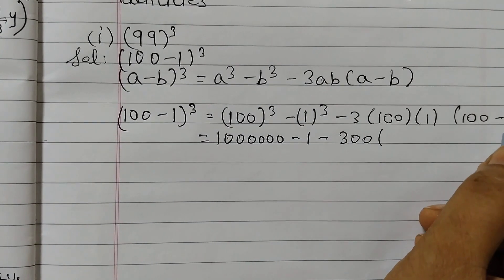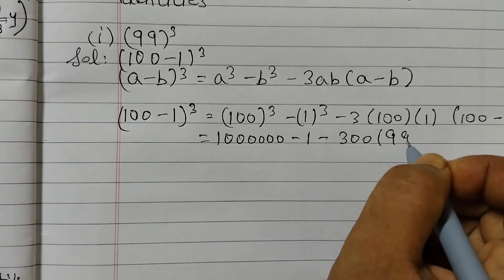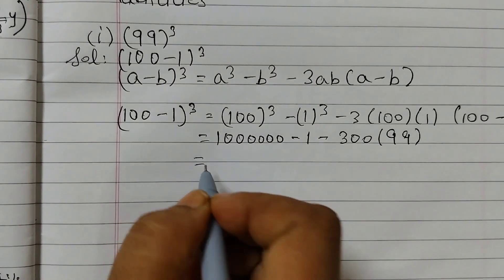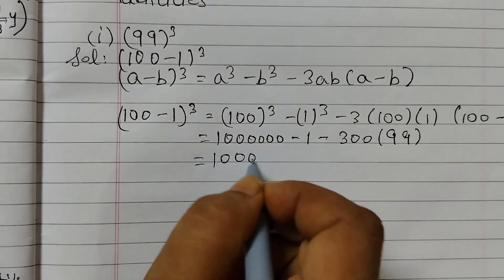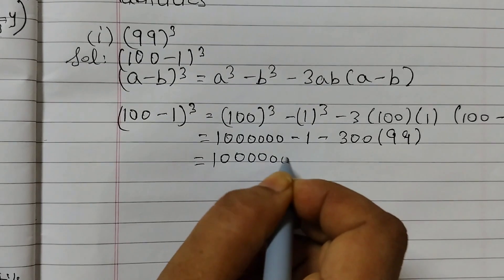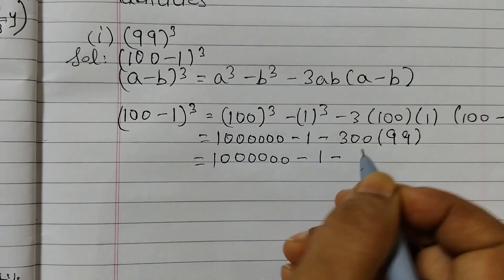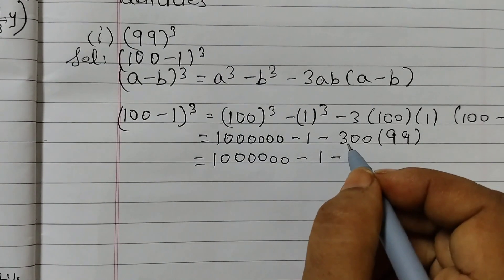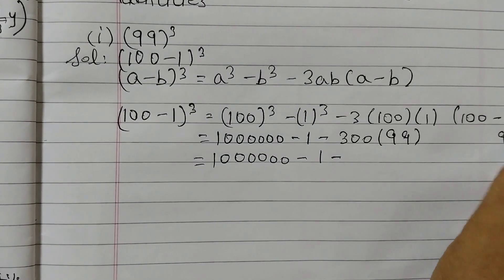So we have 1,000,000 minus 1 minus 300 × 99.